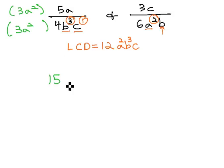3 times 5 is 15, and adding the exponents on a gives us a cubed over that common denominator we want of 12a squared b cubed c.